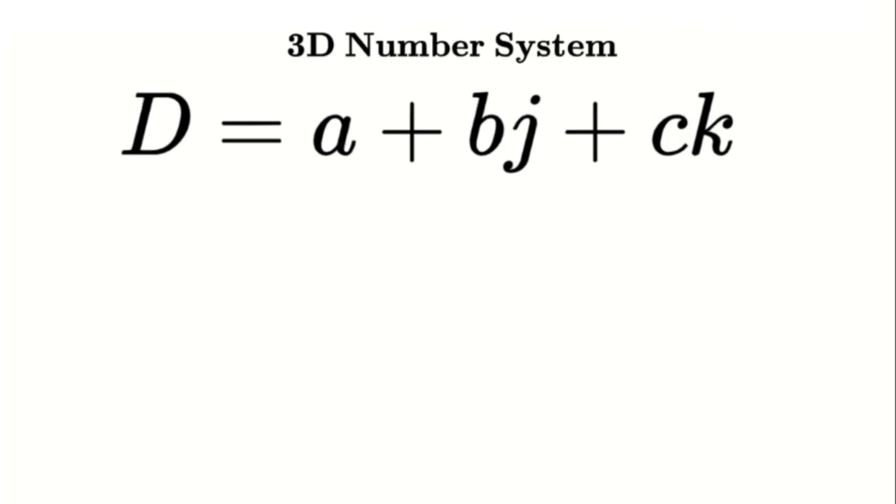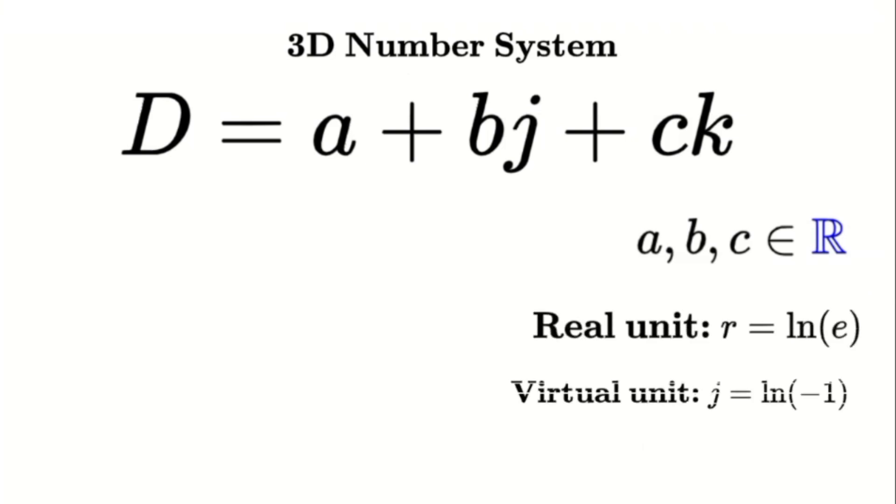Let's break down what each part means. a, b, and c are your familiar real numbers, the ones you use every day. j is the unit from the virtual number system, which, as we mentioned, j equals the natural logarithm of negative 1. And here's the new part: k equals the natural logarithm of 0. This is our singularity unit.